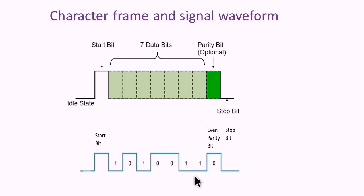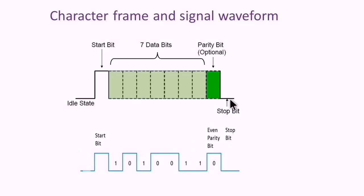This example is an RS-232 link — that is why the logic state is the other way around. Logic one is most negative and logic zero is most positive. Finally, the stop bit indicates the end of the frame.